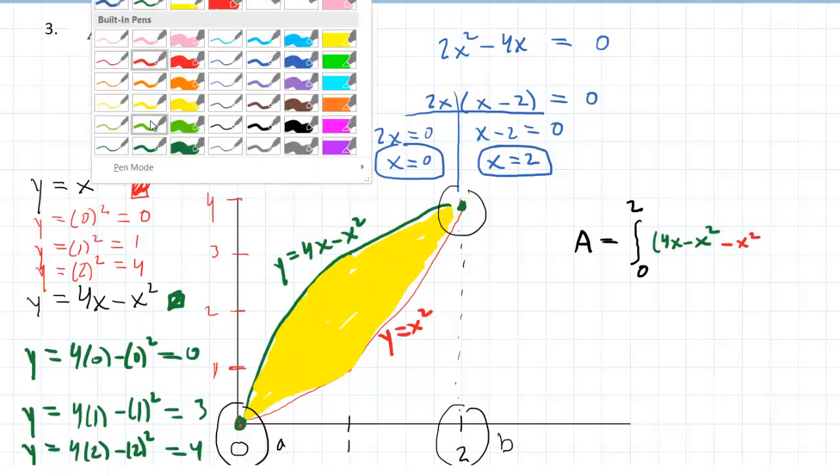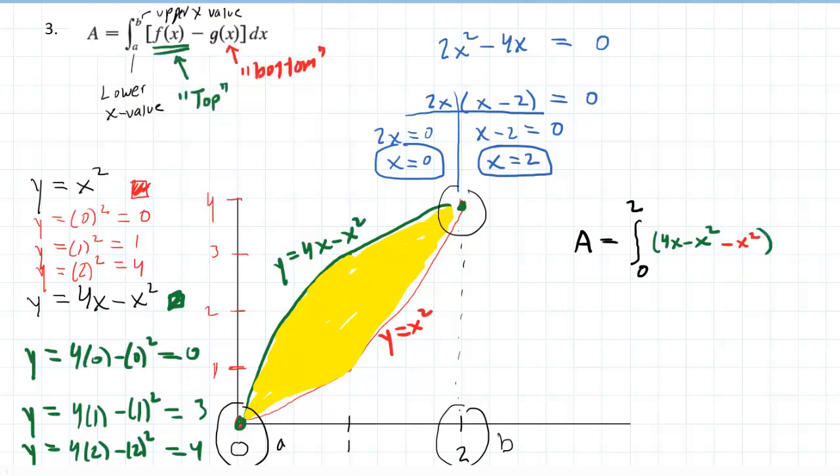And that will complete the setup of the integral. But of course, now we actually have to do the calculus here. And before integrating, it's a good idea to simplify. So we have a minus x squared and another minus x squared. So we're going to make that a minus 2x squared.